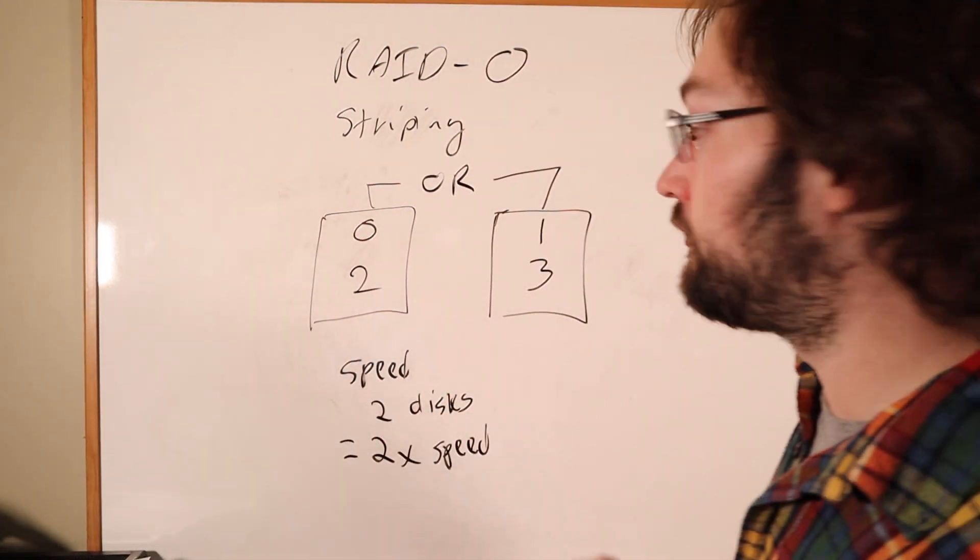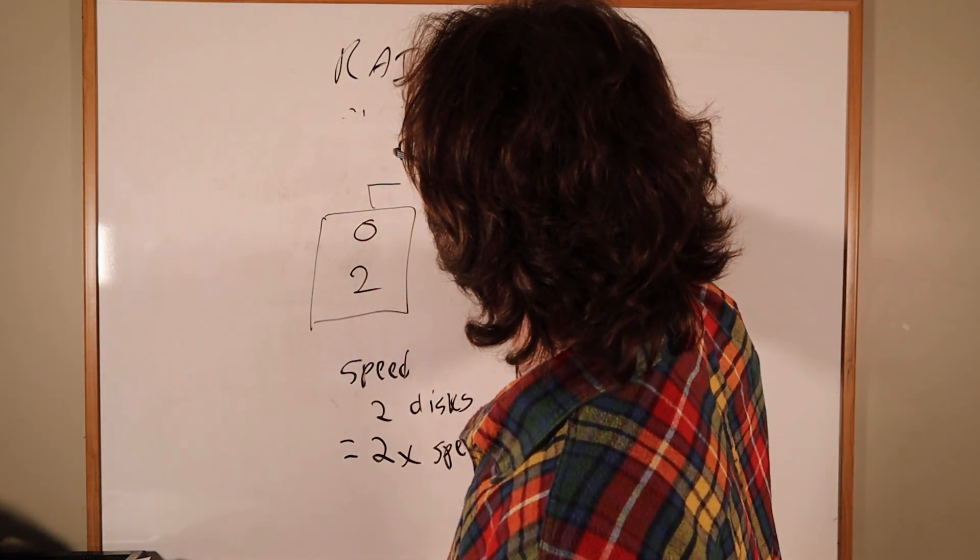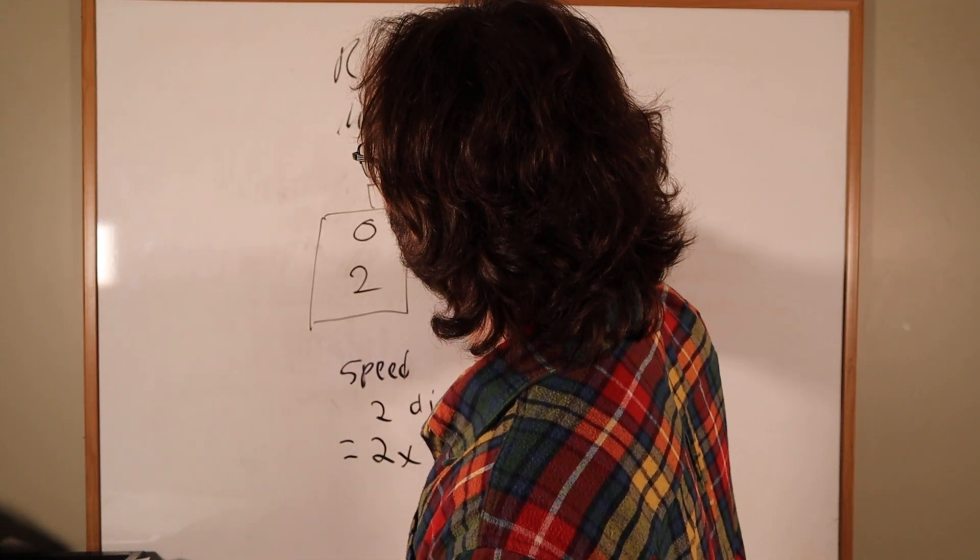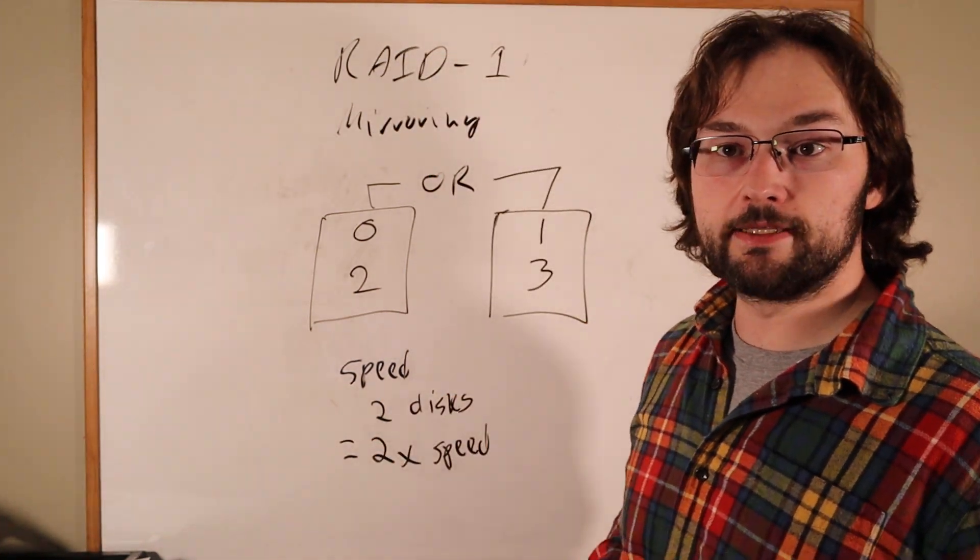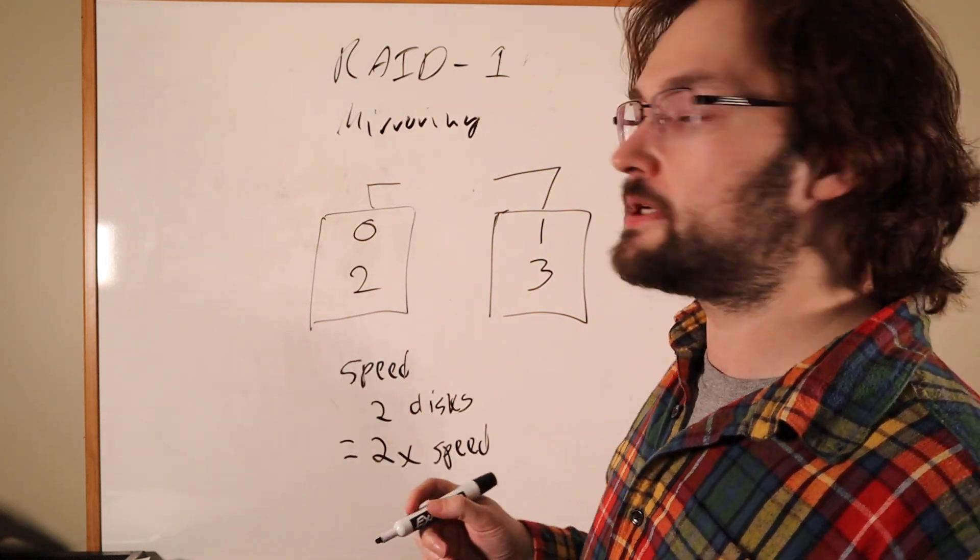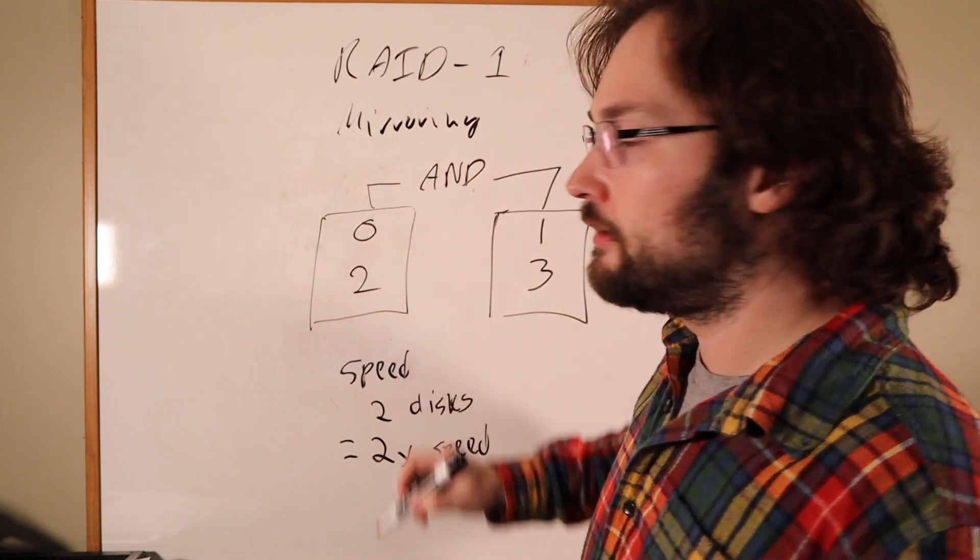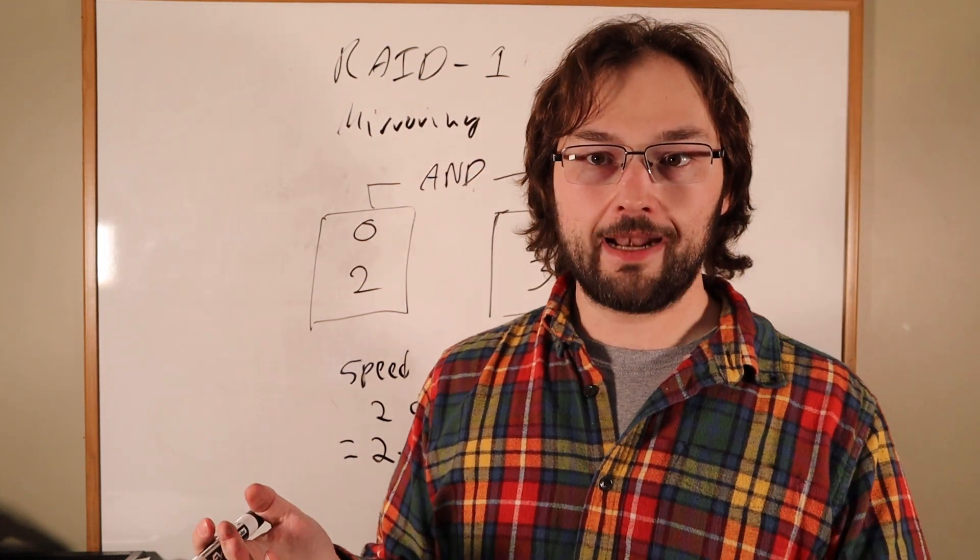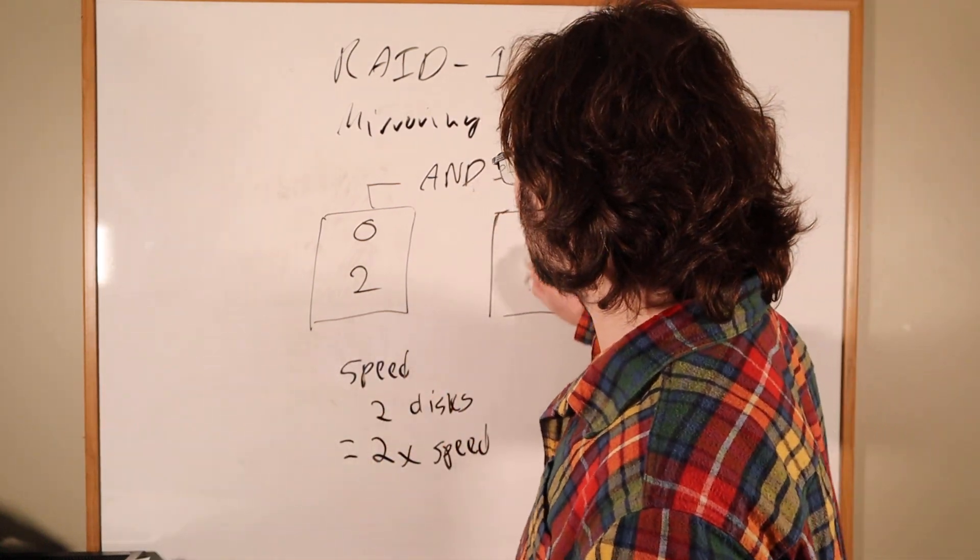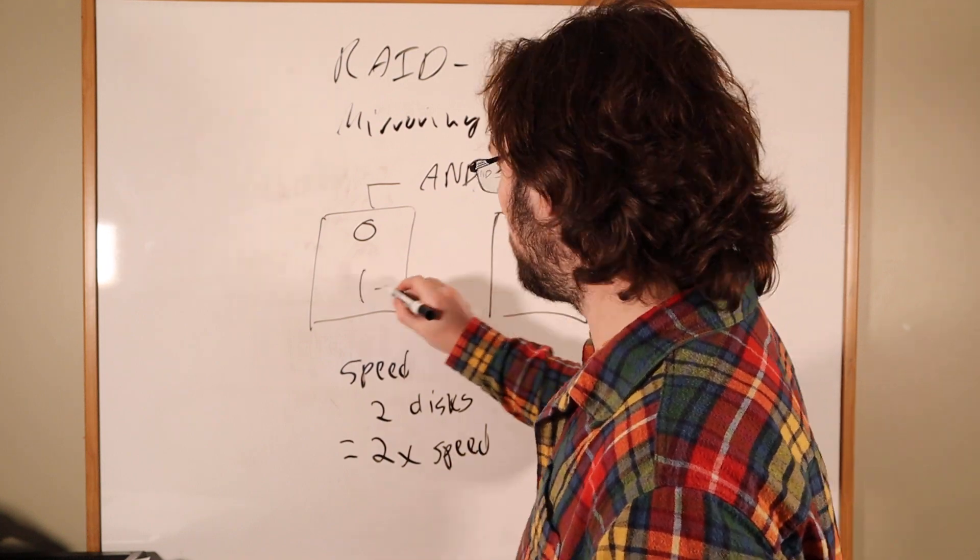RAID 1 is the other sort of base idea, and RAID 1 is called mirroring. Just like with RAID 0, we're going to have two disks as the base case, and just like with RAID 0, we could do this across more than two disks if we wanted to. But instead of saying that we're going to write for any block we're going to write it to one disk or the other disk, in this case we're going to say that for any block we're going to write it to one disk and also the other disk.